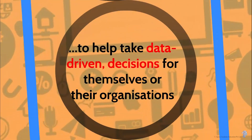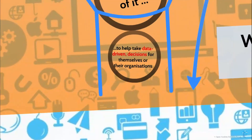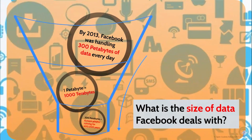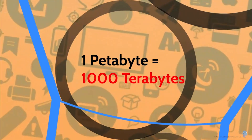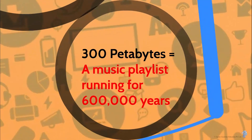Zillions of data is being generated out of social media every day. Facebook, by the end of 2013, was handling 300 petabytes of data every day, and it's a number that has only grown exponentially since then. If you're not sure what 300 petabytes actually means — one petabyte is equal to 1,000 terabytes — and if you were to have 300 petabytes of MP3 music, it would take you 600,000 years to run through that playlist.